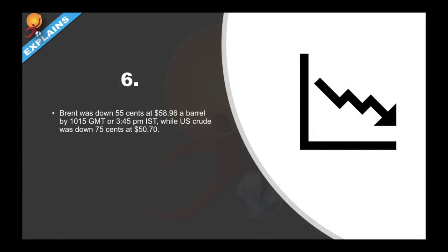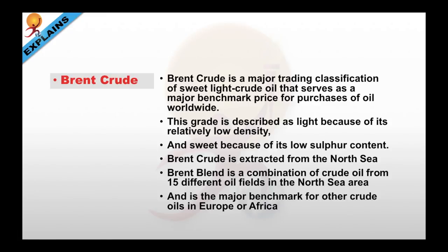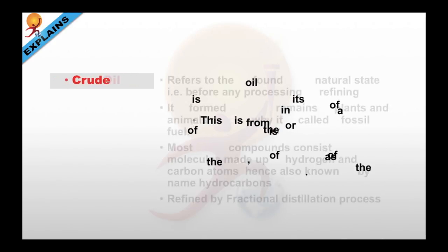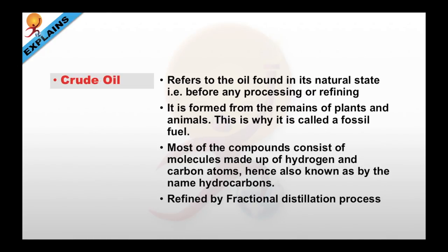Brent was down 55 cents at $55.96 a barrel by 10:15 GMT, while US crude was down 75 cents at $50.70. Brent crude is a major trading classification of sweet and light crude oil that serves as a major benchmark price for the purchase of oil worldwide. It is described as light because of its relatively low density and sweet because of its low sulfur content. Brent crude is extracted from the North Sea, and when used as 'Brent Blend,' it refers to a combination of crude oil from 15 different oil fields in the North Sea area, serving as the major benchmark especially in Europe and Africa.